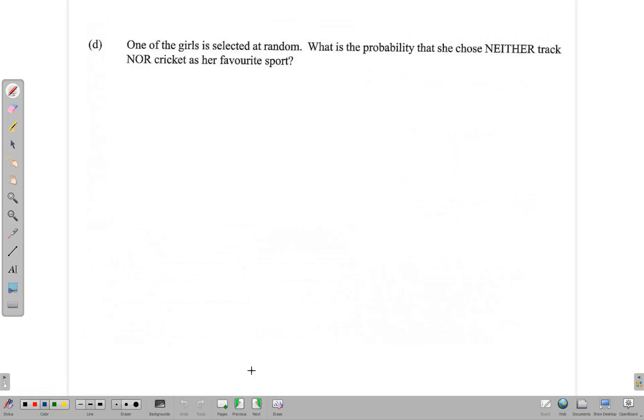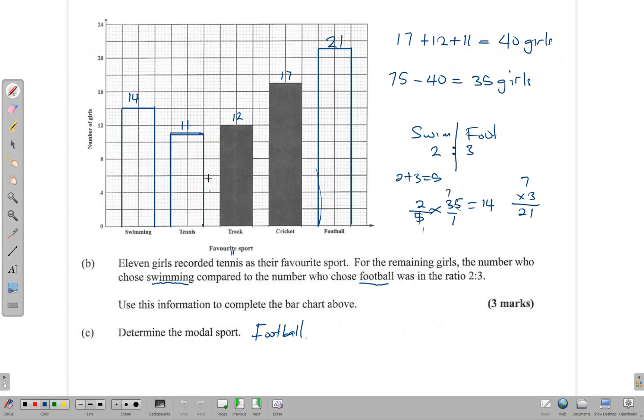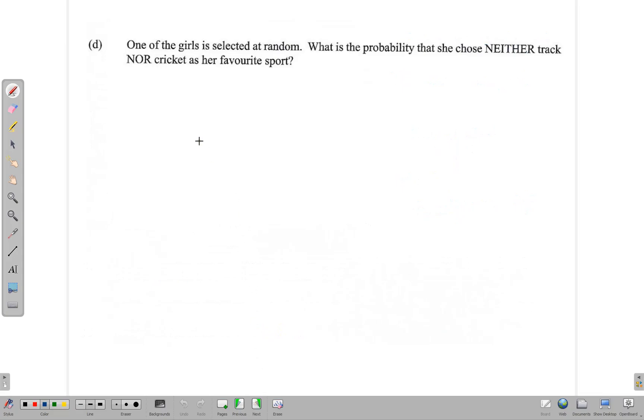Here we have: One of the girls is selected at random. What is the probability that she chose neither track nor cricket? So if she chose neither track nor cricket, it means she chose swimming or tennis or football, which means 14, 11, and 21.